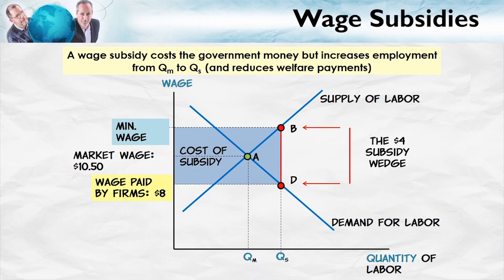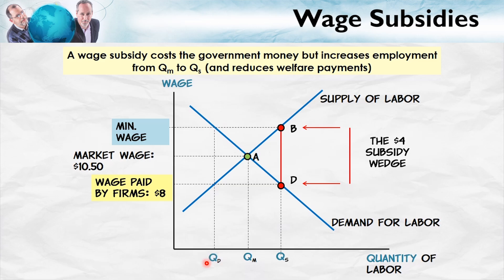There are two key points about the minimum wage. First, it doesn't cost the government anything, which is one reason taxpayers may like it better than a wage subsidy. It does cost employers. And what we can see is that at this minimum wage, the demand for labor would be much less — the demand for labor would only be QD. A big difference is that the wage subsidy increases the demand for labor, while a minimum wage decreases the demand for labor and decreases the number of low-skilled jobs.